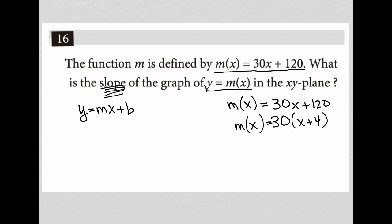I'm told that y = m(x), which means I can take this original function m(x) = 30x + 120 and remove the m(x) and call it y because that's what I was told. Like, y = m(x). So this becomes y = 30x + 120.